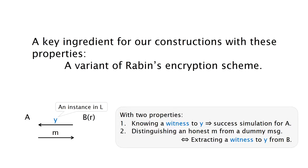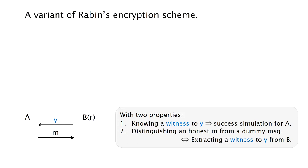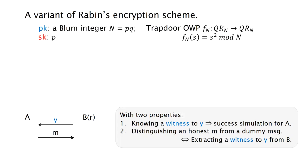We now turn to our constructions. A key ingredient for our constructions with these two properties is a variant of Rabin's encryption scheme, which is basically a Goldreich-Levin approach to encryption. The public key is a Blum integer N, and the secret key is a prime factor of N. This defines the trapdoor one-way permutation F, which maps the quadratic residue S to S squared modulo N.